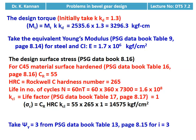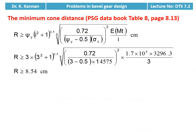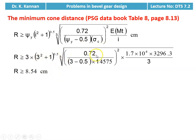We take ψY = 3 for i = 3 from table number 13, page number 8.15. Then we calculate the minimum cone distance. The equation is on page 8.13, table 8: R ≥ ψY × √(i² + 1) × ∛[0.72 / (ψY − 0.5) × σC² × E × MT(design) / i]. Substituting all numerical values with E = 1.7 × 10⁶: cone distance R ≥ 8.54 centimeter.